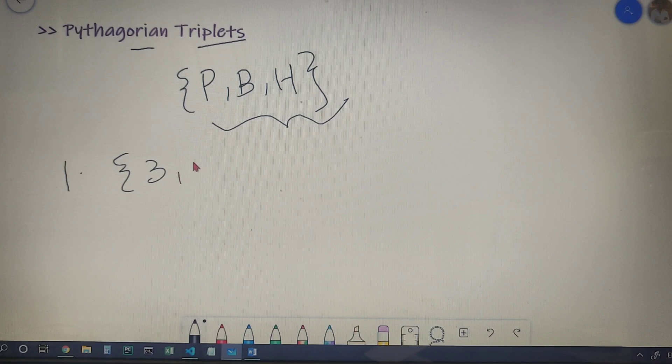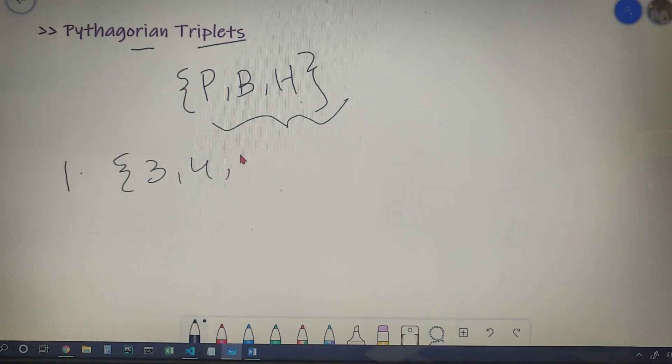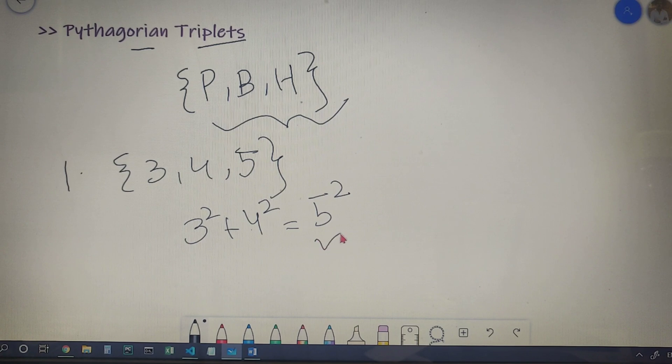Our first example would be 3, 4, and 5. You can check that 3 square plus 4 square is indeed equal to 5 square. We have taken 5 as the hypotenuse because it is the greatest side, and we can take 3 and 4 either as perpendicular or base.